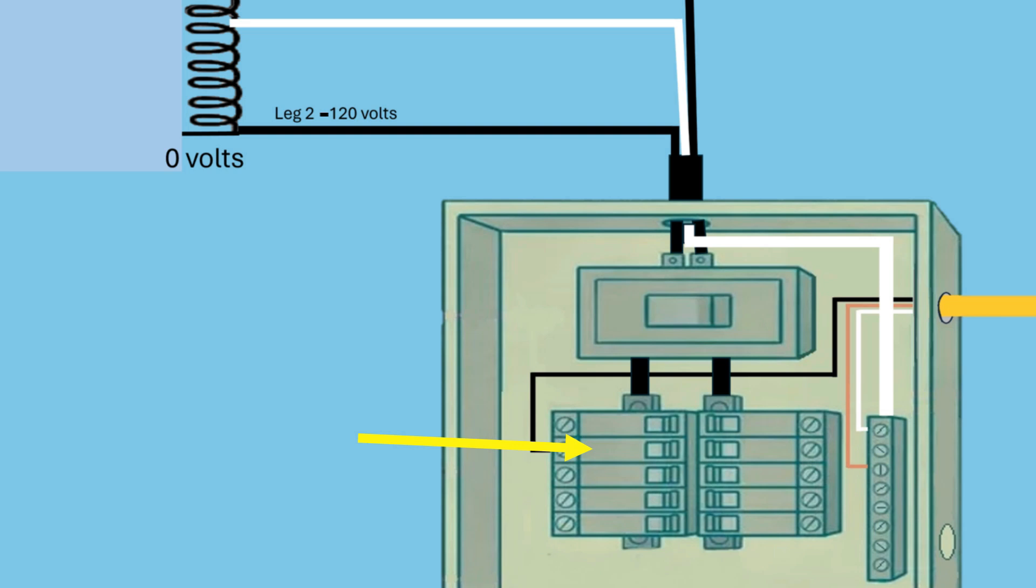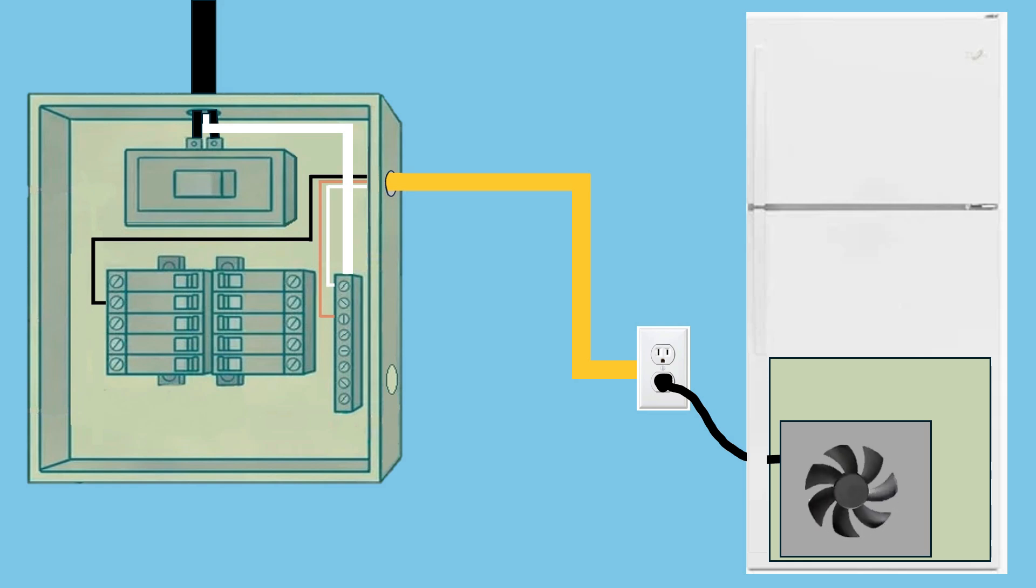So, how does electricity flow in this circuit? It travels from the breaker, through the wires in the yellow Romex, to the electrical outlet, and finally to the refrigerator, and back.